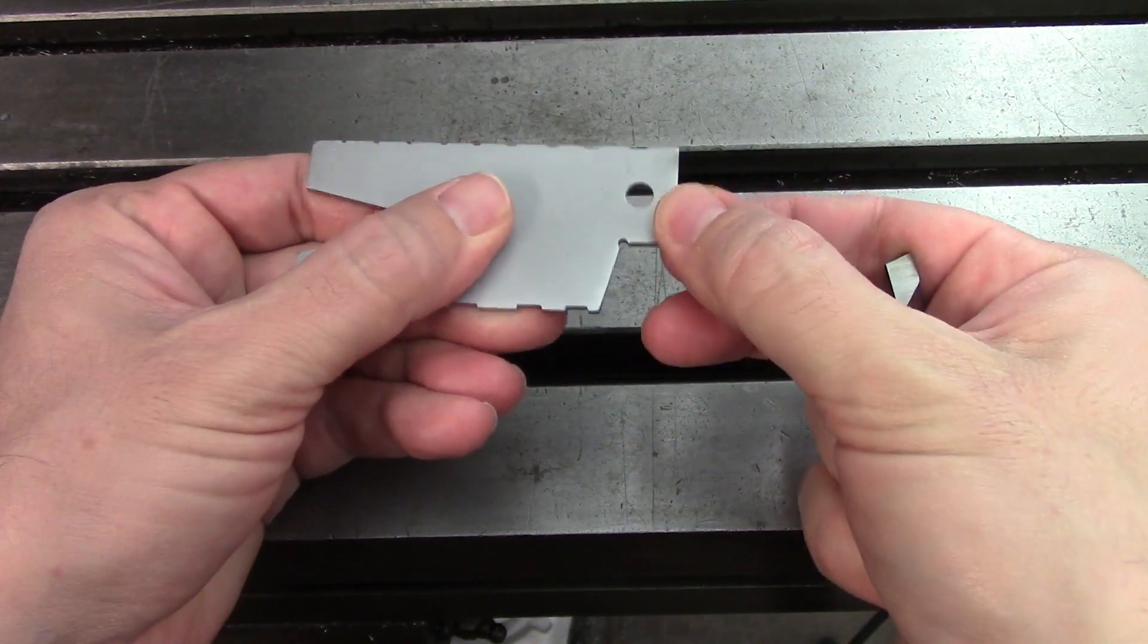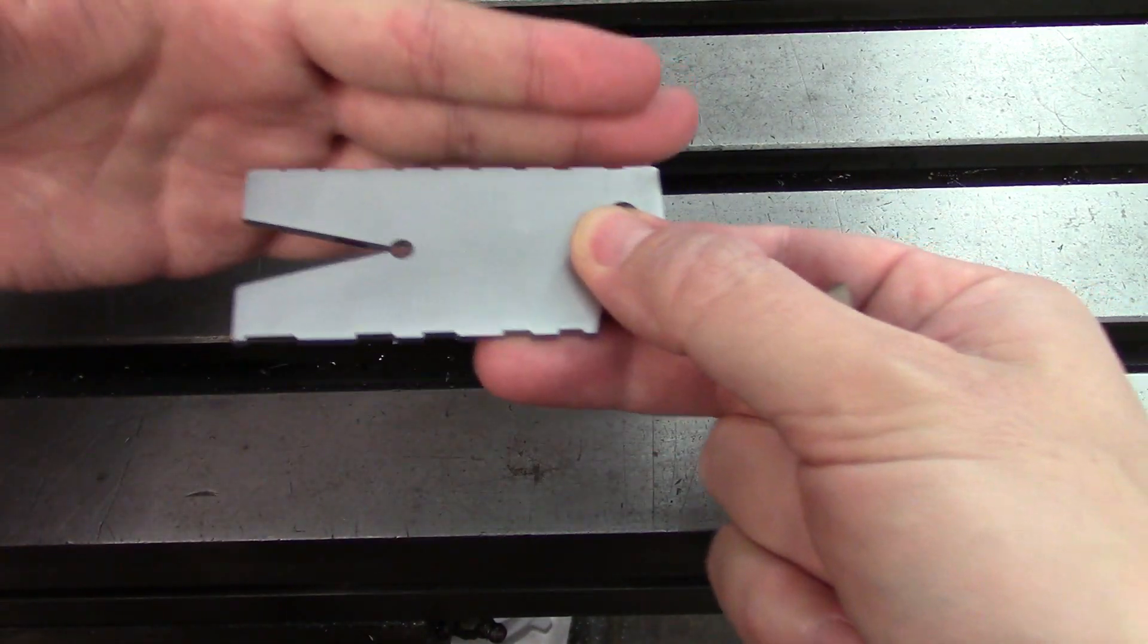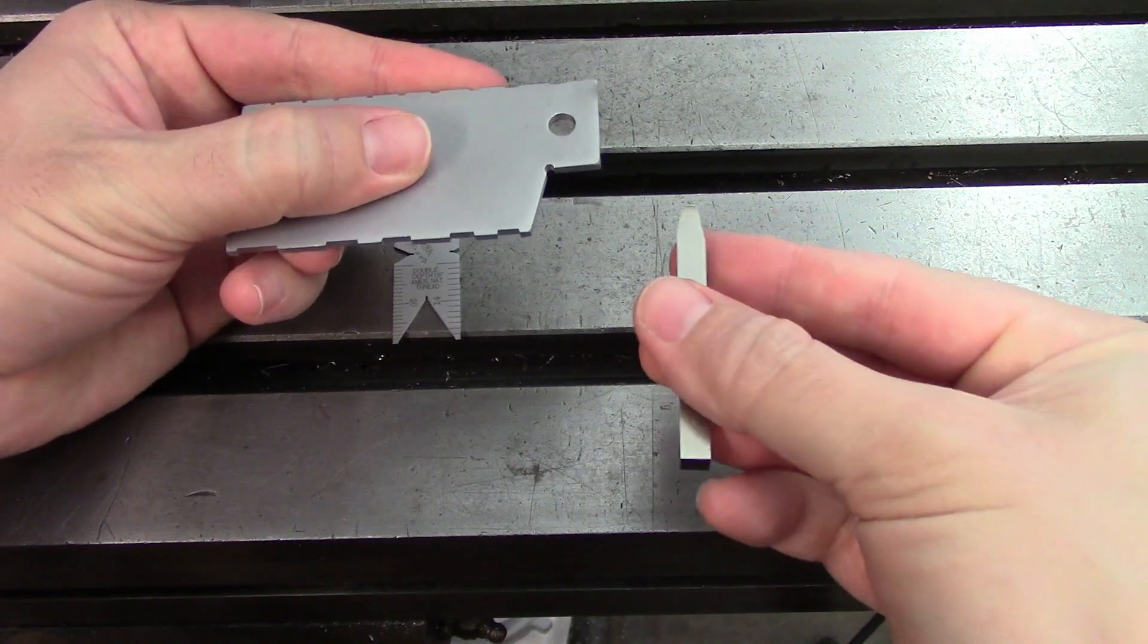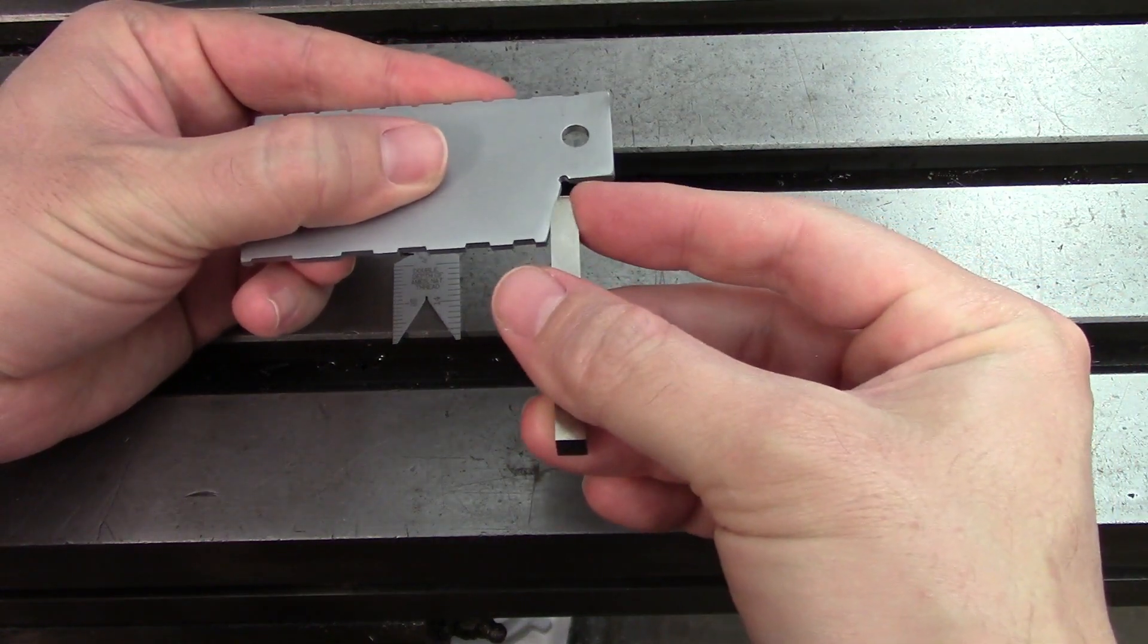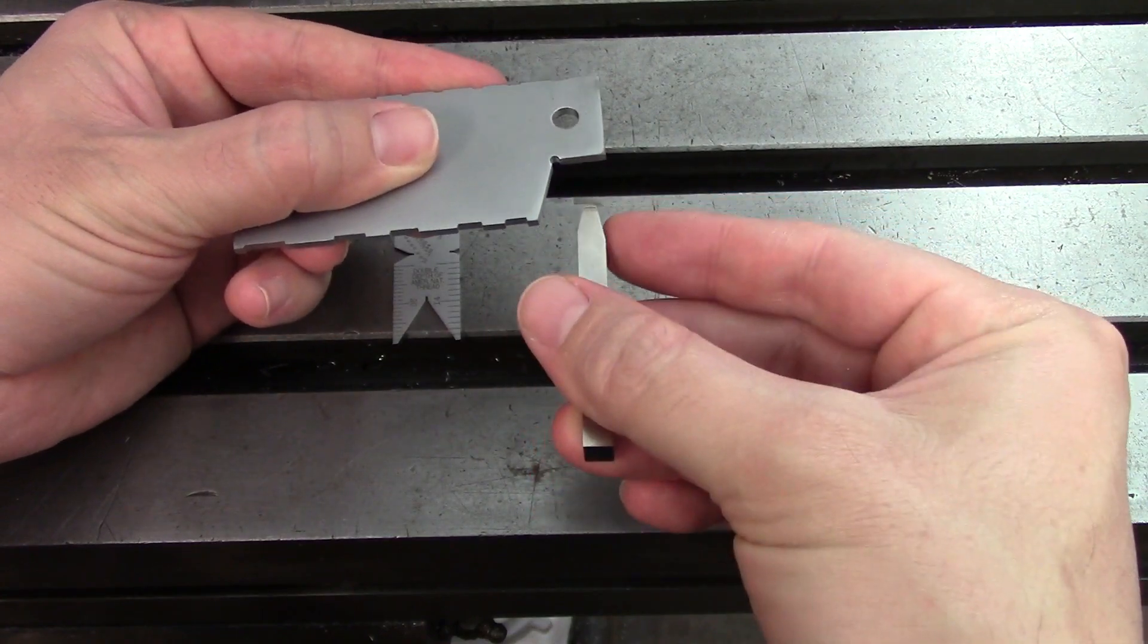And you can also use this when setting it up in the lathe. Much like the fishtail gauge, you would put this flat against your part and then with your tool in the tool holder, line it up against this angle to make sure that your tool is actually perpendicular to the part.